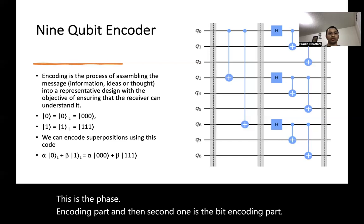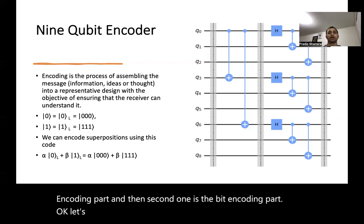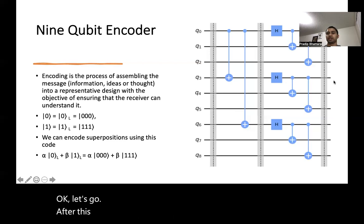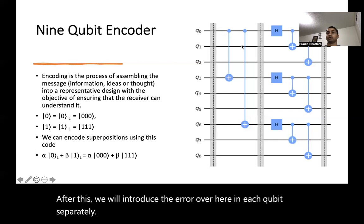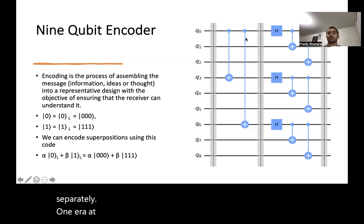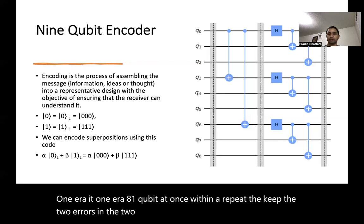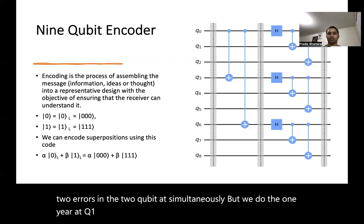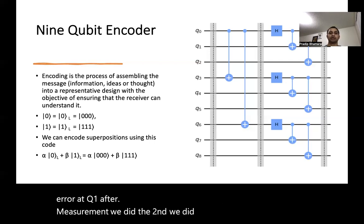After encoding, we introduce an error on each qubit separately — one error per qubit at a time. We do not introduce errors on two qubits simultaneously. We do one error at q1, measure, then move to the next qubit, and so on.